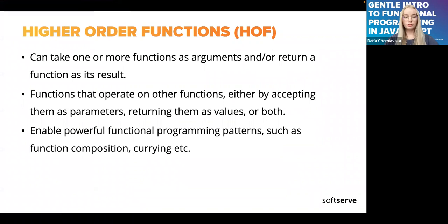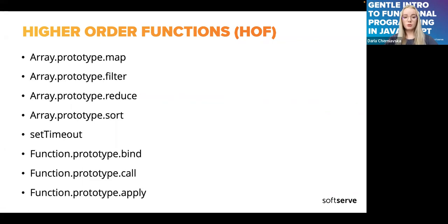Higher-order functions in JavaScript are functions that can take one or more functions as arguments and/or return a function as their result. In other words, they operate on other functions, either accepting or returning them. Higher-order functions enable powerful functional programming techniques like function composition and currying. This is probably one of the easiest concepts in functional programming because if you use JavaScript, you've probably already used them a lot — functions like map, filter, and reduce are classic examples.